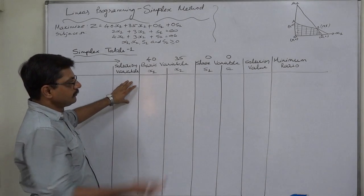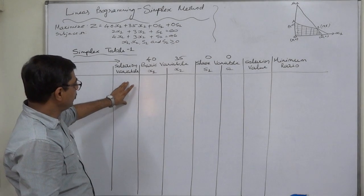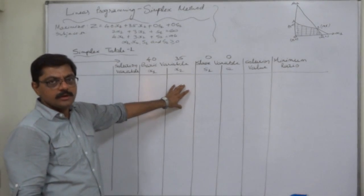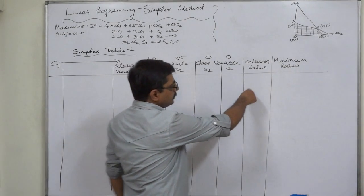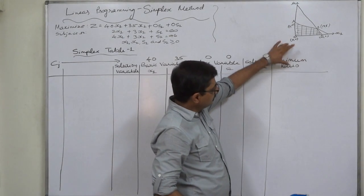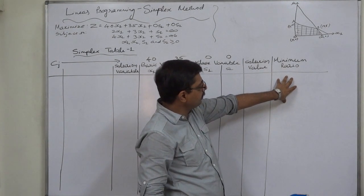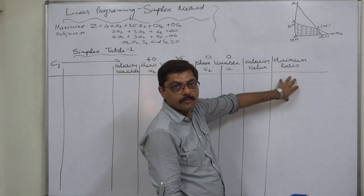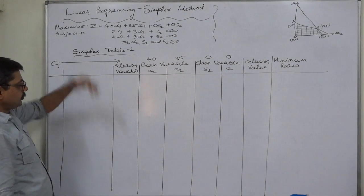The solution variable column lists variables one by one as they come in — incoming variables will be placed here. X1 and X2 are the two basic variables representing the products, and S1 and S2 are the two slack variables. The solution value column is part of the calculation. The last column is titled 'minimum ratio' because from this column we select the non-negative minimum ratio result.